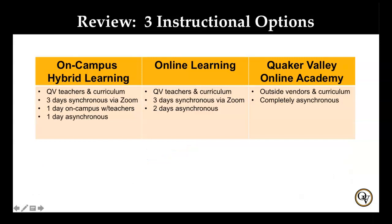Here is a quick recap of Quaker Valley Middle School's three instructional options for the 2020-2021 school year. First, the on-campus hybrid learning option utilizes Quaker Valley teachers and curriculum, allows for three days of live synchronous instruction via Zoom, one day of on-campus instruction with classroom teachers, and one day of independent asynchronous instruction. Students will be split into two alphabetical groups consistent across both the middle school and high school. Second, the online learning option also utilizes Quaker Valley teachers and curriculum, providing three days of live synchronous instruction via Zoom and two days of independent asynchronous instruction. Lastly, the Quaker Valley Online Academy utilizes outside vendors and curriculum and is completely asynchronous five days a week.